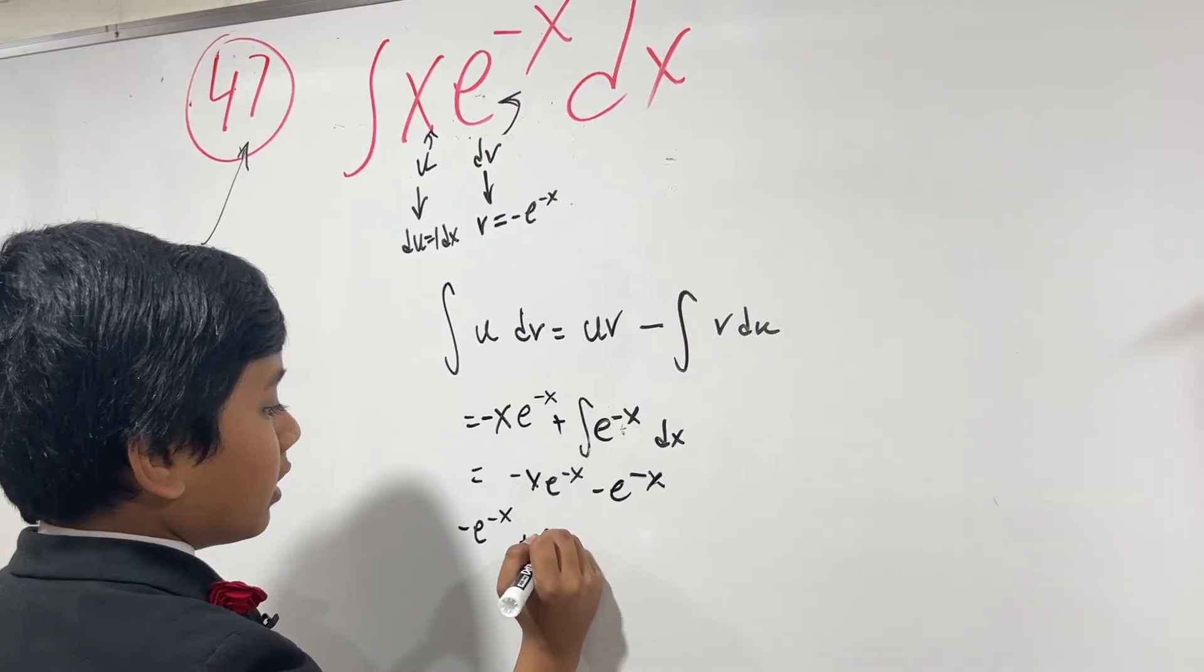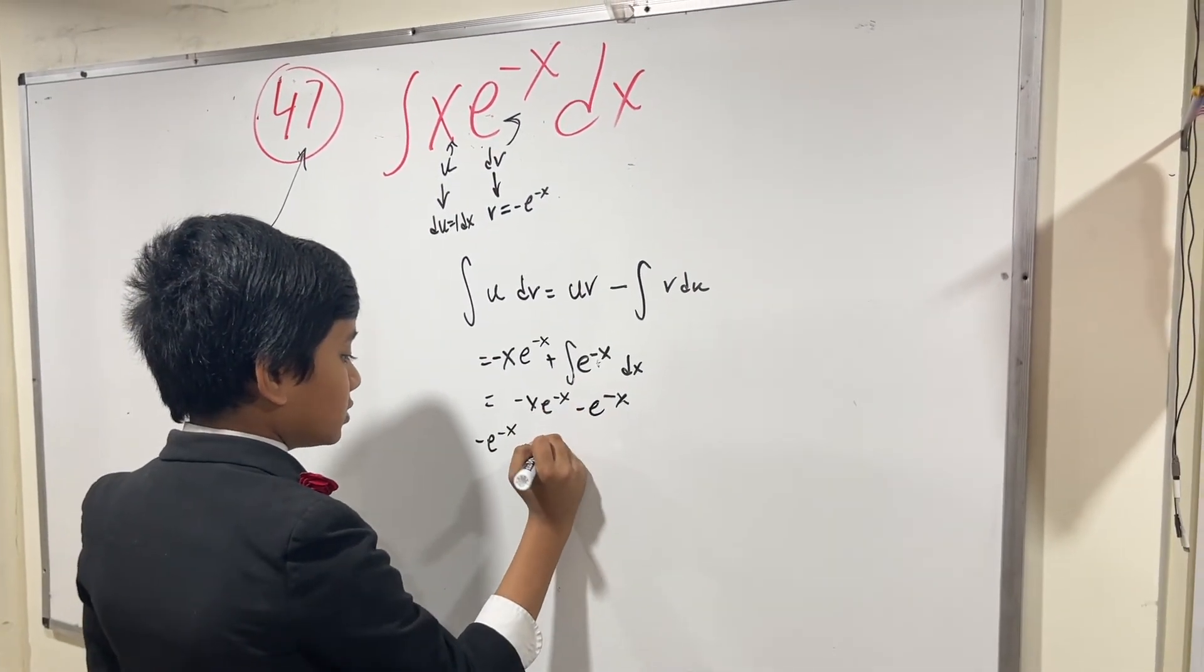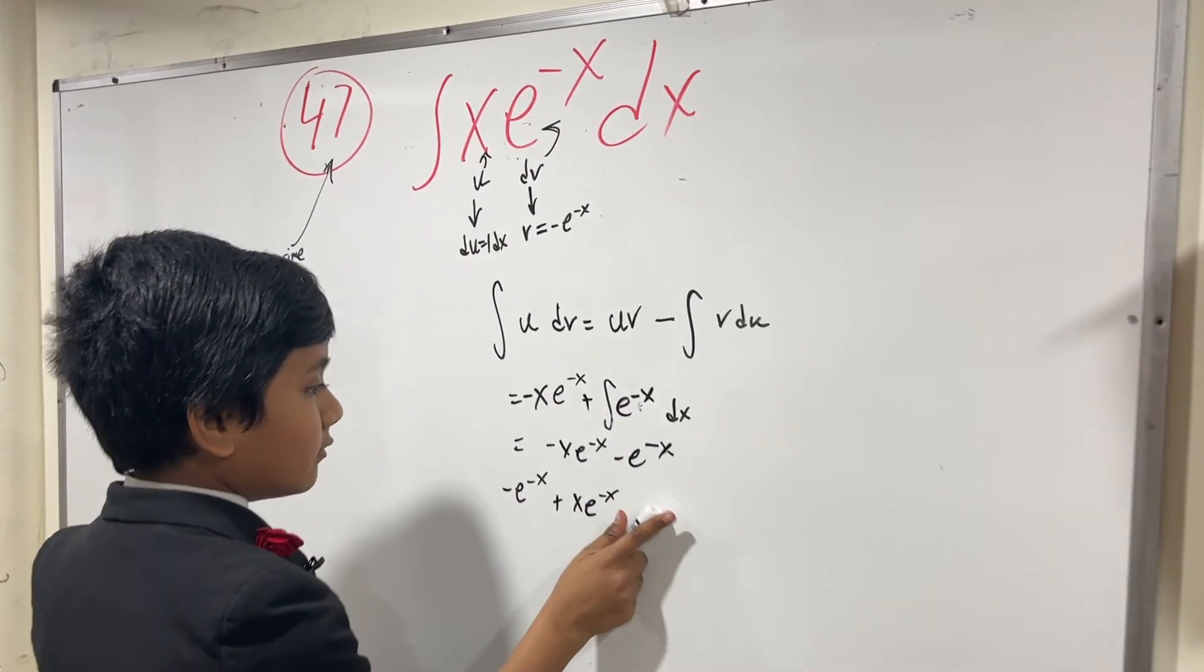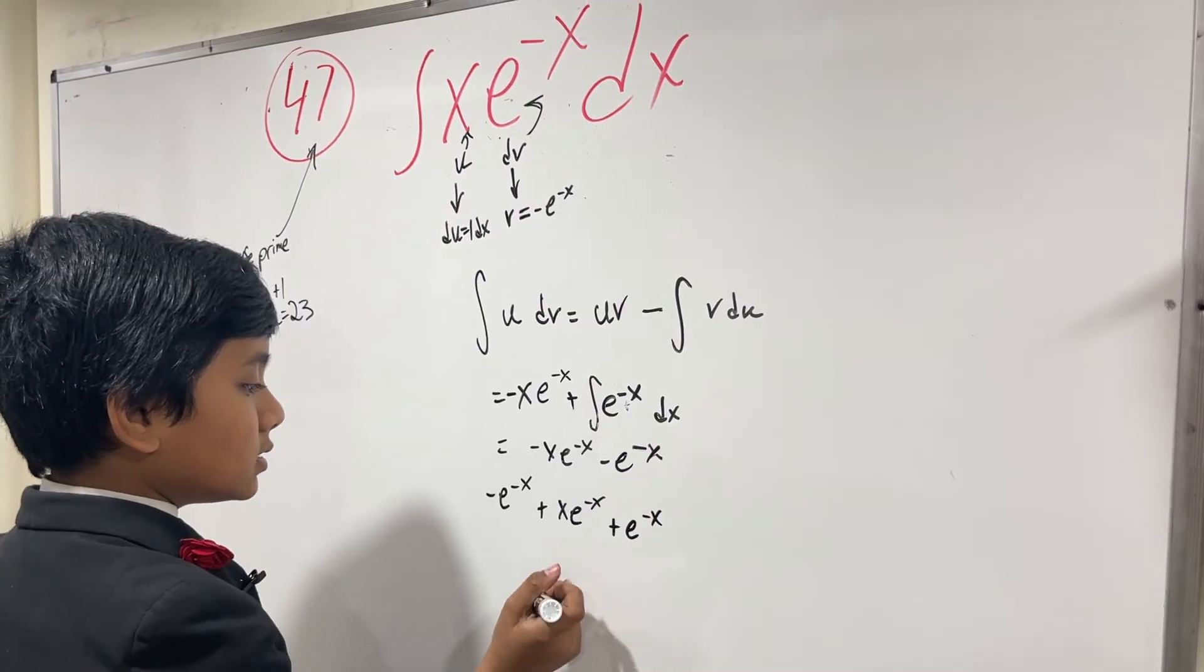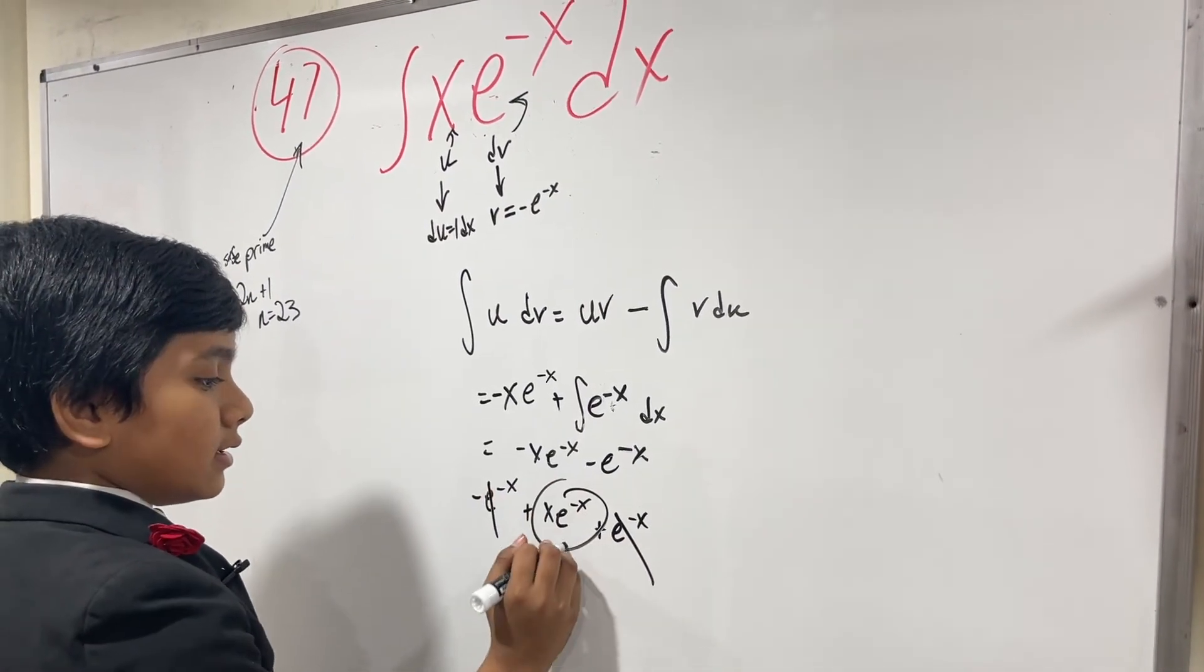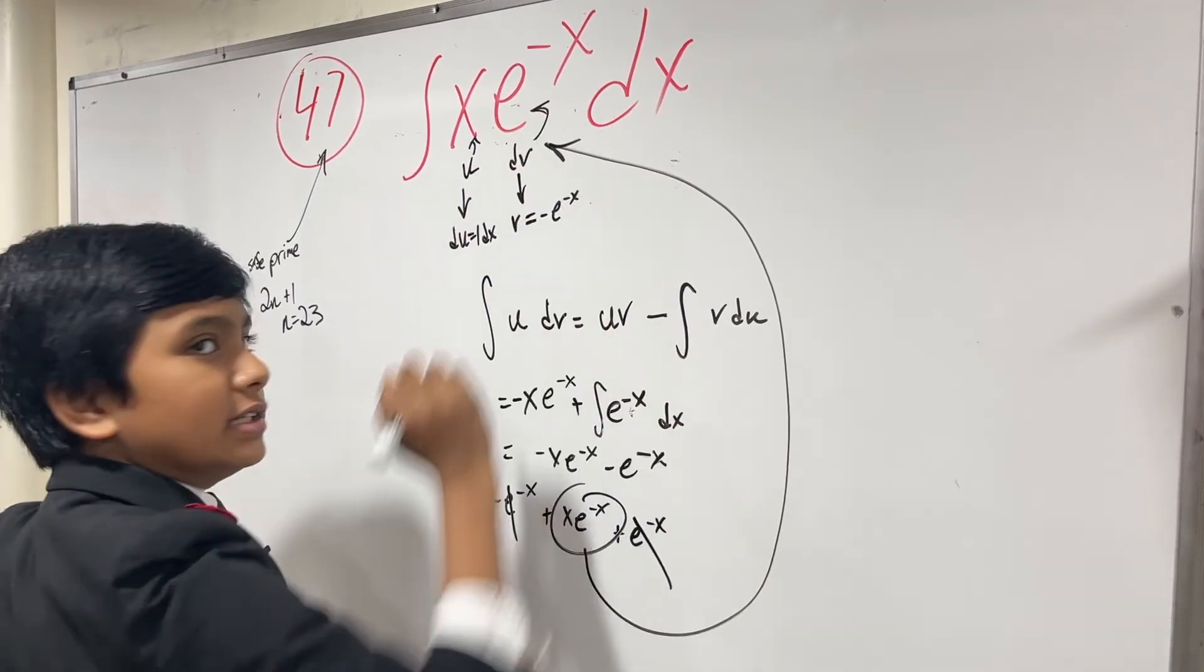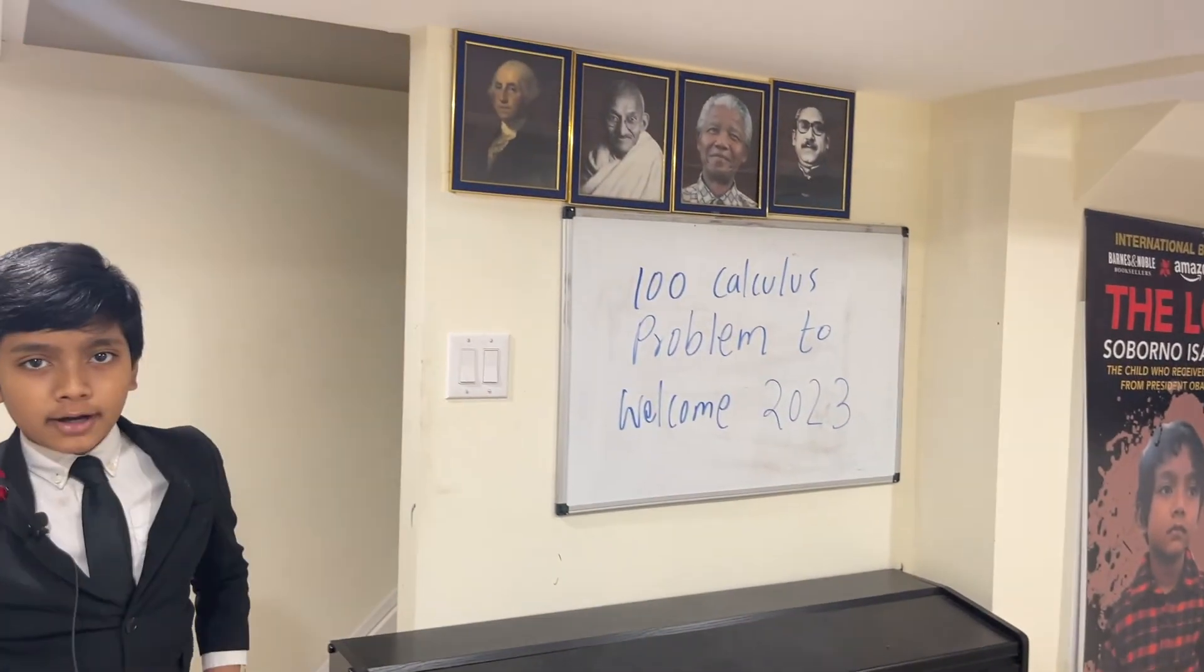Then we have the derivative of -e^(-x), which is simply +e^(-x). We see that these terms cancel out, and we get x*e^(-x) like we started with. That's it! Thank you everybody for watching, and we'll see you in the next one.